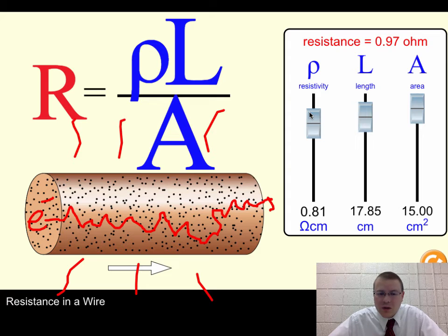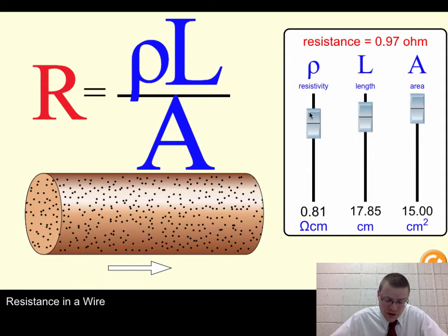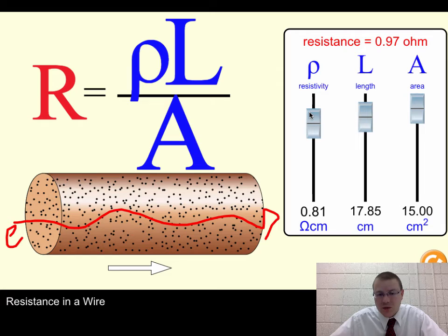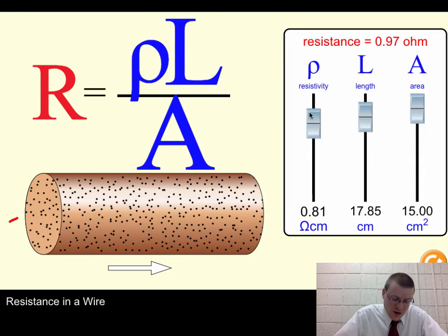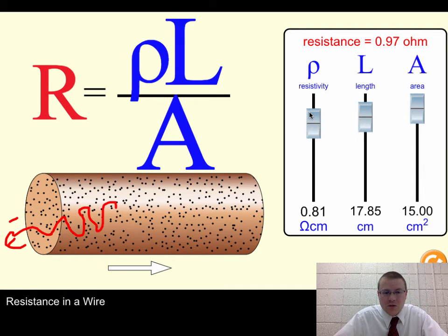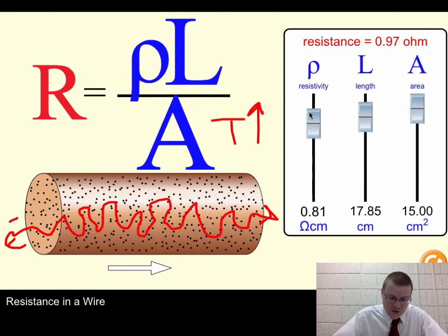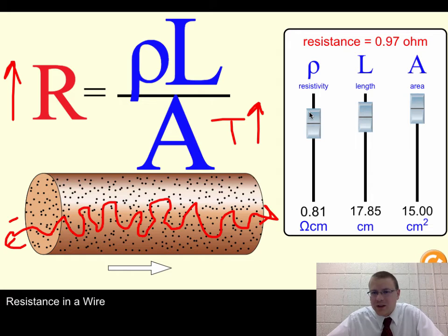One thing that we didn't throw in here was the temperature of the wire. What would temperature have to do? Well, on a very cold day, everyone that was moving in this hallway would be moving very slowly. So a charge would be able to find the gaps very easily and make it through. So if you decrease the temperature of a conductor, you can decrease its resistance. But if it's a hot day, say near the end of the year, all the people in the hallways are running around like crazy. So when that electron tries to make it through, it's just going to collide more often with all the atoms. So increased temperature also has an increased resistance.